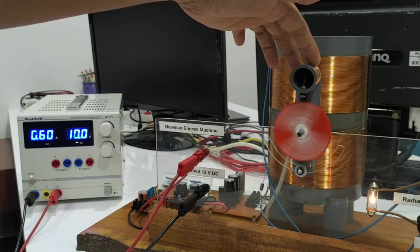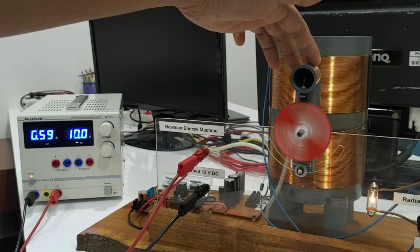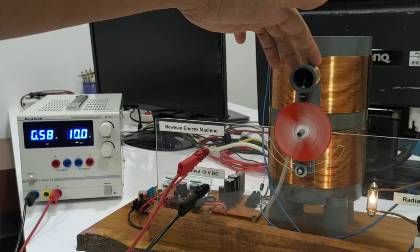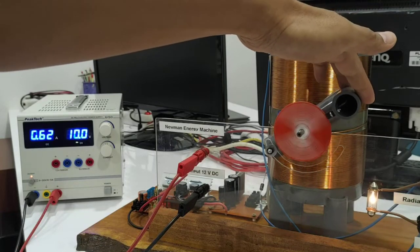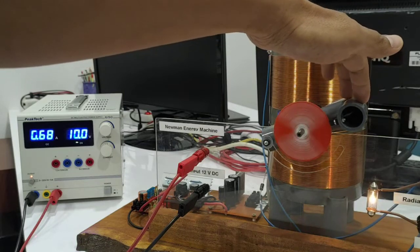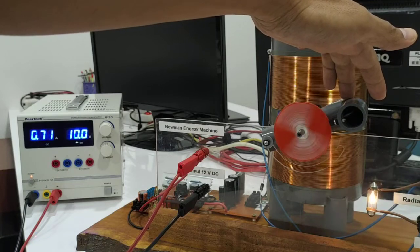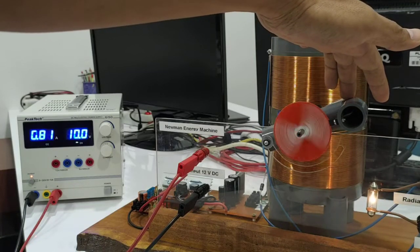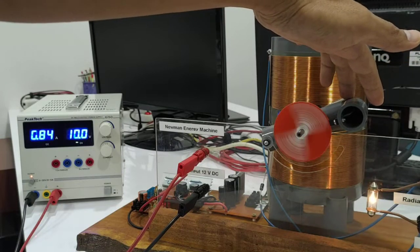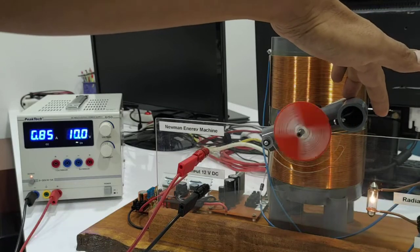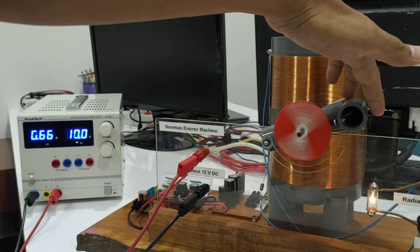Now the RPM is stable again. I'm going to put the sensor to the right, all the way to the right. Same thing happens: RPM goes down, input power increases.